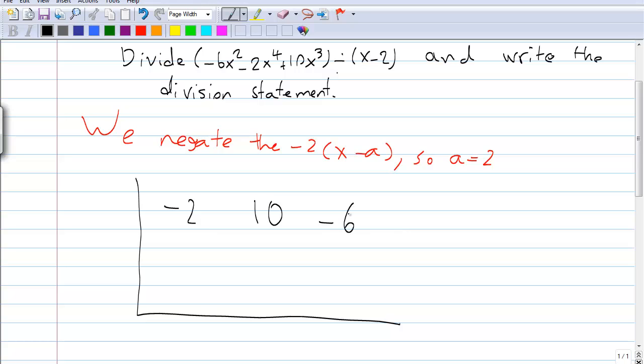We don't have anything for x to the power of 1, so we put 0. We also don't have any constant terms, so we put 0 for the constant term.